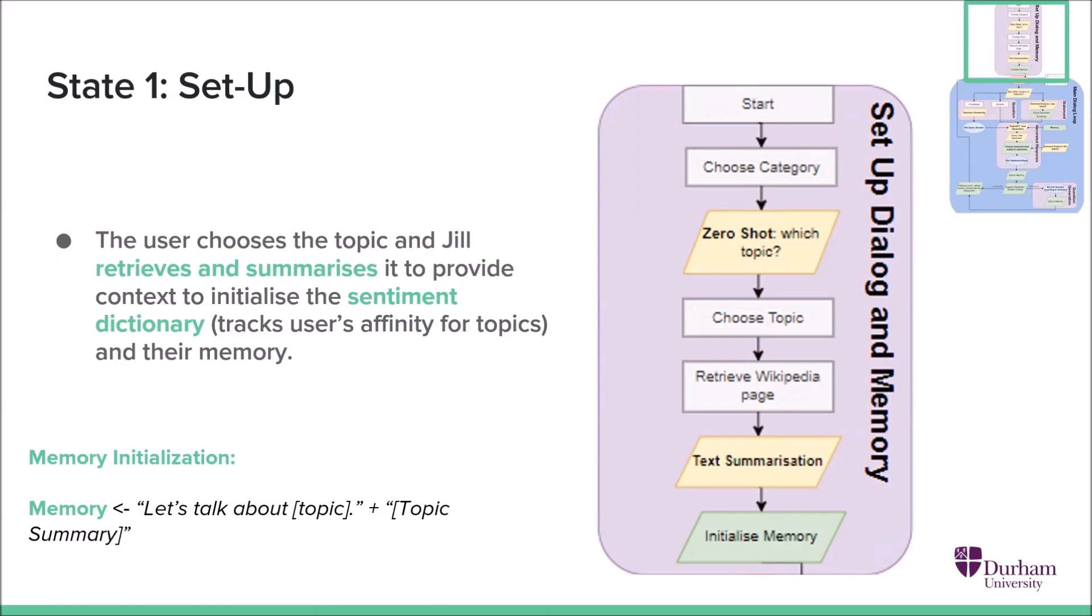The user then chooses a topic which can be absolutely anything. And Jill does a Wikipedia API query, pulls the page, does a summarization of it,